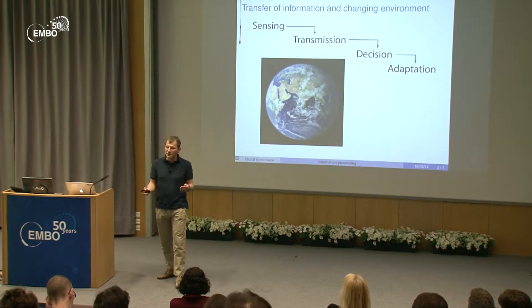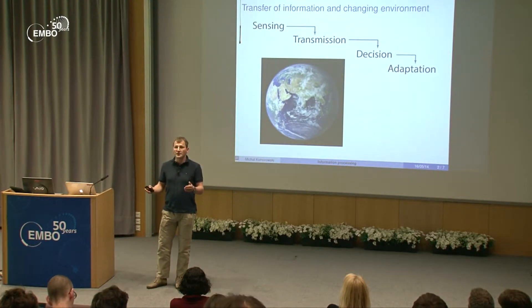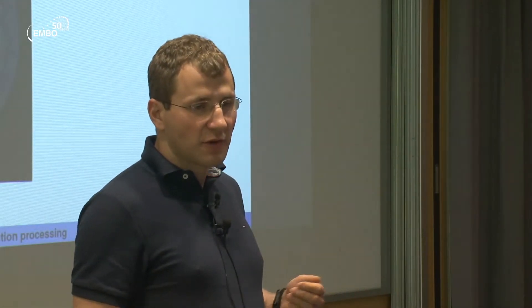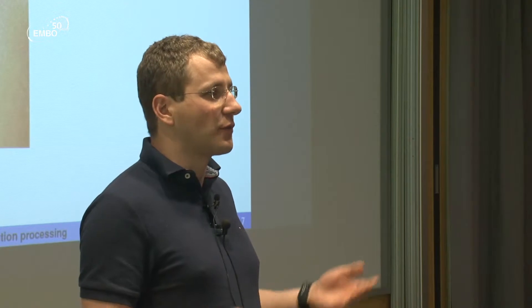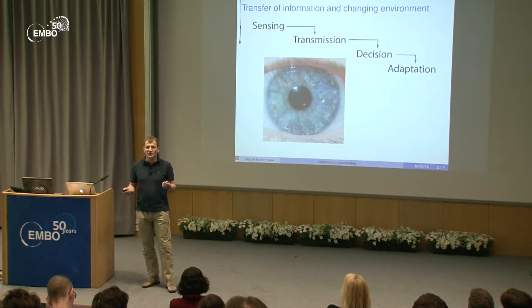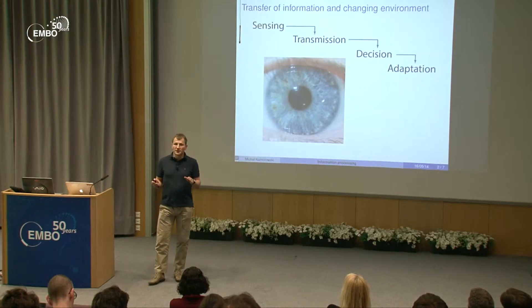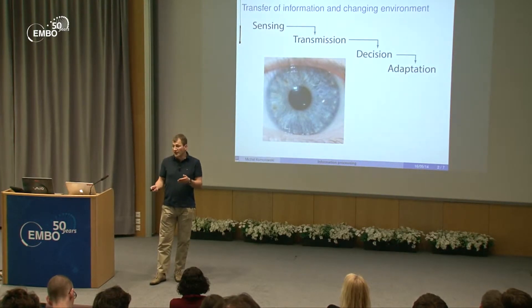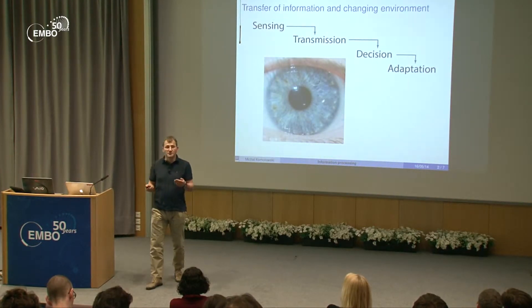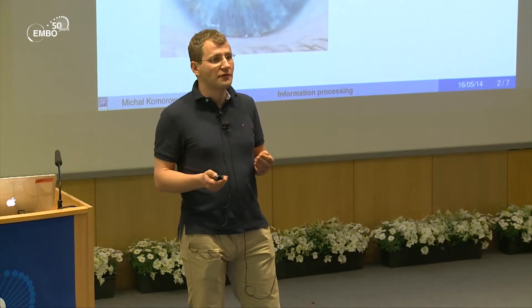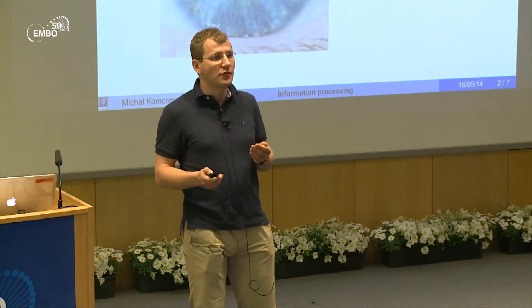Cells can sense the environment, transmit signals, and then decide what is the best adaptation step. We observe how this works on a daily basis when we sweat, or when the iris in our eyes shrinks in excess light.